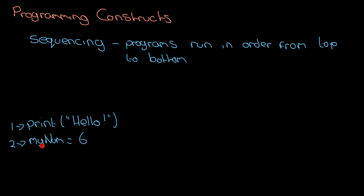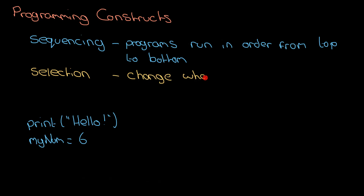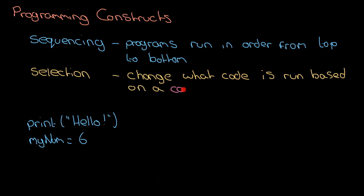That's the idea of sequencing — we go from top to bottom, unless something affects the order, which is what the other two programming constructs do. The second one is selection. This is the idea that we can change what code is run based on a condition. Conditions are really important for both selection and iteration. Almost all programming languages use if statements for selection.